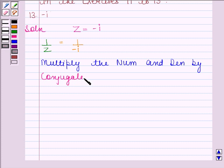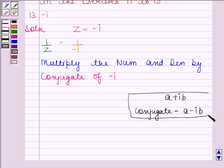You should know that conjugate of a complex number A plus iota B is obtained by replacing iota with minus iota. So conjugate of A plus iota B is A minus iota B. So conjugate of minus iota is plus iota.